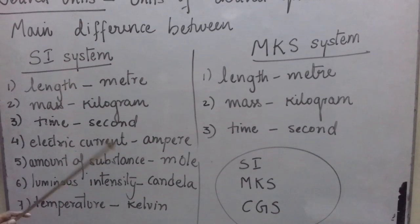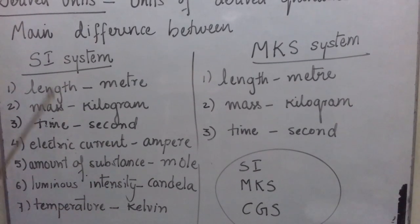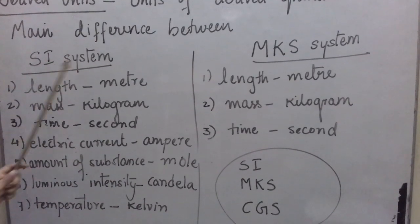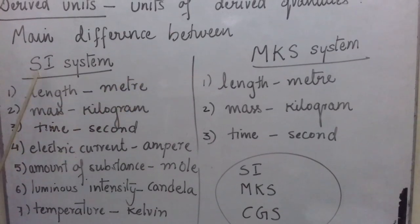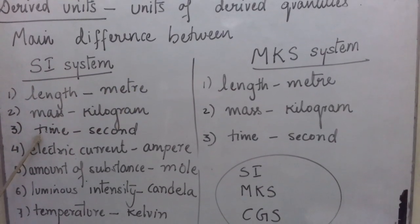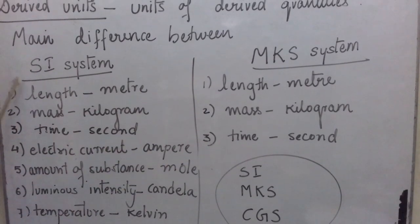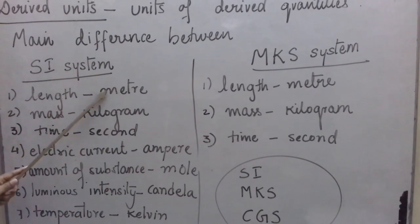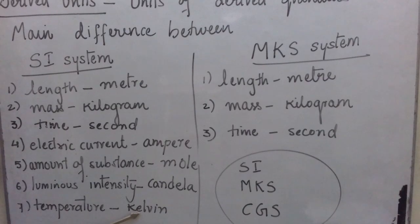There is no need to memorize these units — this is just for your knowledge, to know the major difference between the SI system and MKS system. Both systems have the same units for length, mass, and time, but in MKS there are three fundamental units and in SI there are seven fundamental units. I hope you have achieved all the learning outcomes of this video. Thank you.